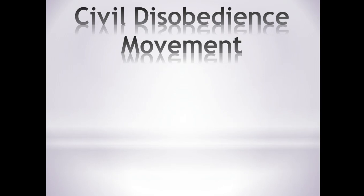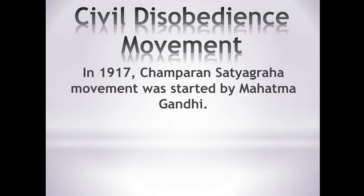Next came the Civil Disobedience Movement, also called Champaran Satyagraha. This movement was led by Mahatma Gandhi. The idea of civil disobedience was to protest, do hunger strikes, and raise slogans — to get freedom without taking up arms, to make one's point without violence.